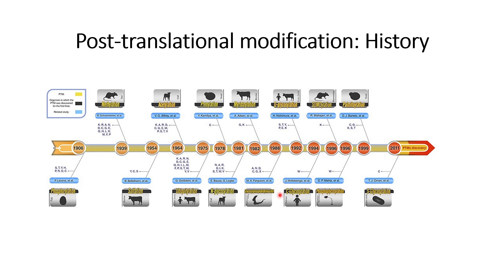C-glycosylation was identified in 1994. SUMOylation was identified in 1996 and is related to protein stability. In 1996, fucosylation was also identified. Then in 1998 palmitoylation was identified, and more recently in 2011 S-glycosylation was identified.